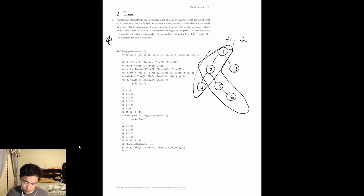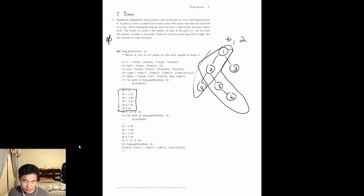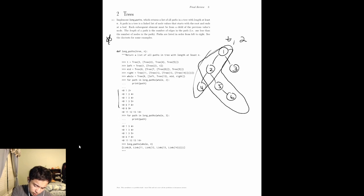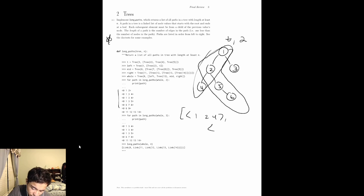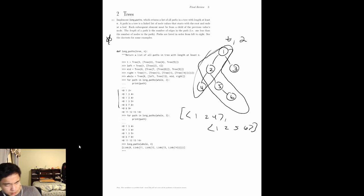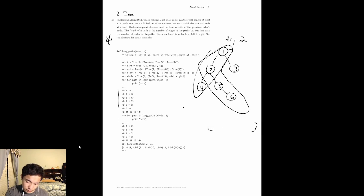Our resulting values should be a list of a bunch of linked lists. Note that these are linked lists of node values. So our answer might look something like [1, 2, 4] and [1, 2, 5, 6]. That's kind of the idea of what this should do. Let's figure out how we want to approach this problem.